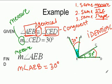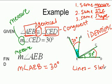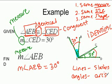Hopefully this has helped you understand how to read congruent diagrams. Remember: lines have slashes and angles have arcs. If you are still confused and need more help, you can look at the written lesson or call your teacher.